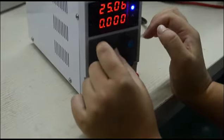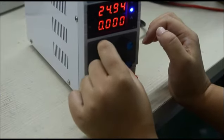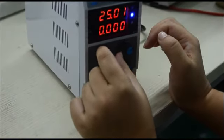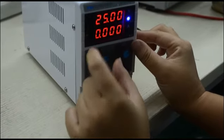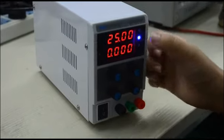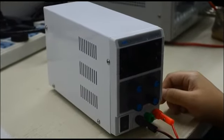Then use this knob to get the accurate value. So now you see it's 25. Now setting the ampere.